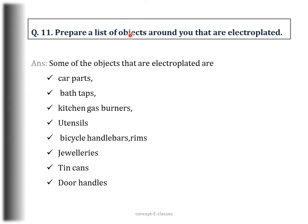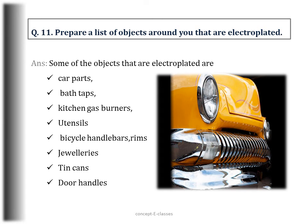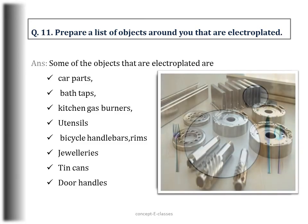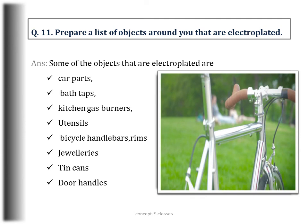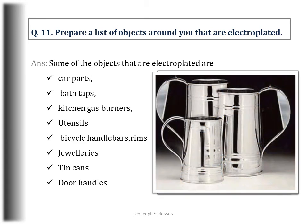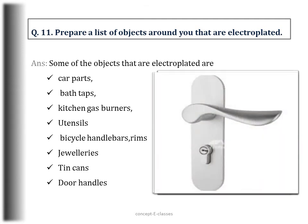Question number 11: Prepare a list of objects around you that are electroplated. Electroplating is the process of depositing a layer of any desired metal on another material by means of electricity. We do chromium plating on many objects such as car parts, bath tubs, kitchen gas burners, utensils, bicycle handlebars, and wheel rims. Jewellery makers electroplate silver and gold on less expensive metals. Tin cans used for storing food are made by electroplating tin onto iron, and similar is the case with door handles.